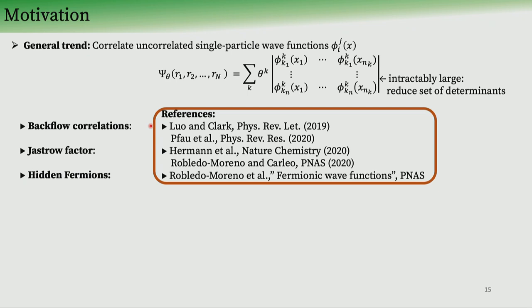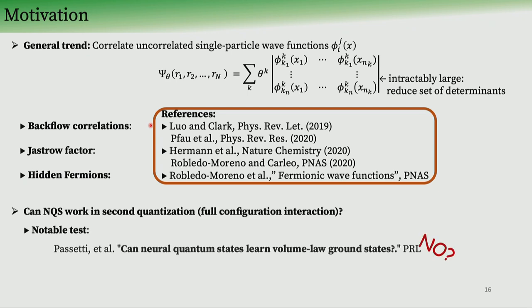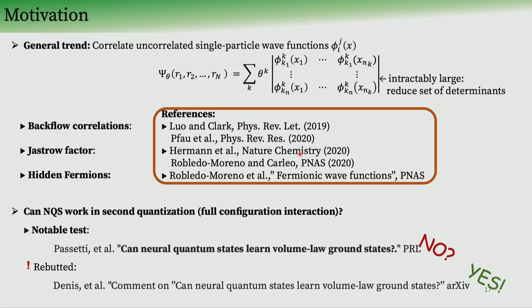But what about working in second quantization? When in second quantization, there's a work that stands out in particular, and that's by Passetti, a work that tried to find the ground state of a SYK model, which is of course a volume-law entanglement state. But they found that this cannot be done efficiently. However, this work was then swiftly rebuked by Deng and company, who showed, well, this can in fact be done.